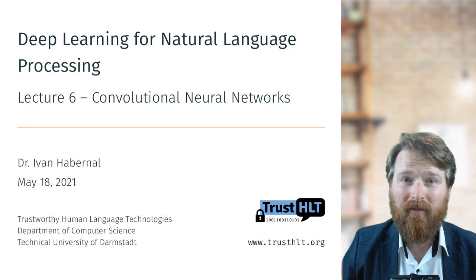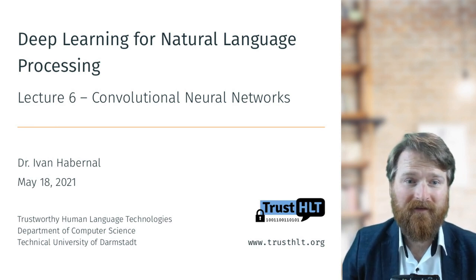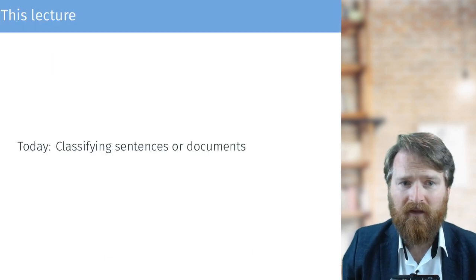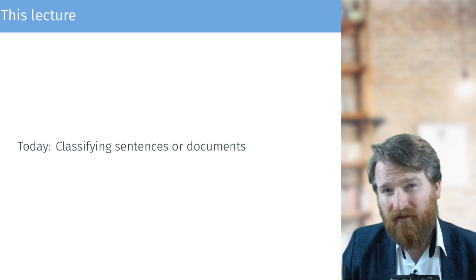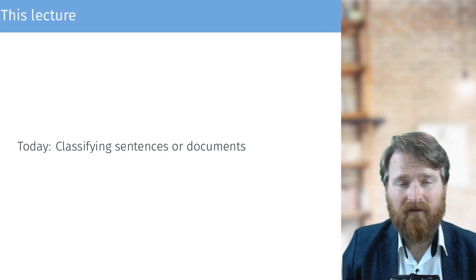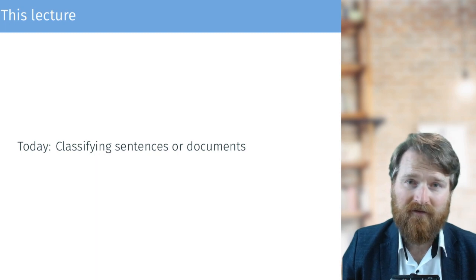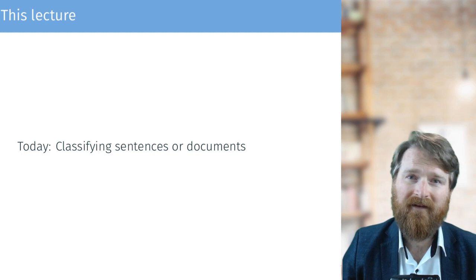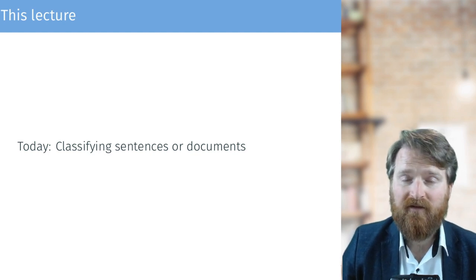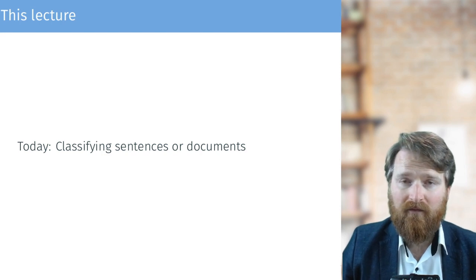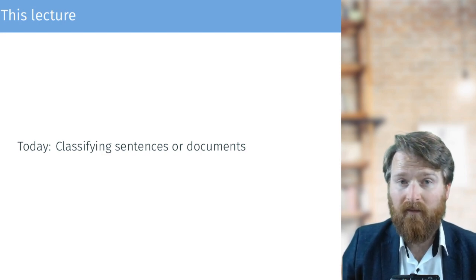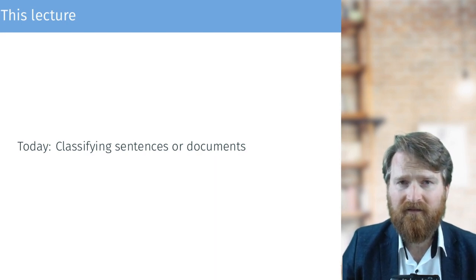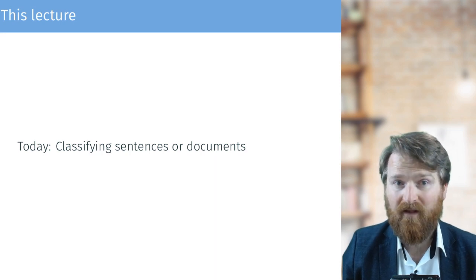Welcome to Deep Learning for NLP, Lecture 6. My name is Ivan Habernau and today we'll be talking about convolutional neural networks. In the last few lectures we spent a lot of time talking about embeddings and different sorts of embeddings, why they are important as the basic building blocks of what makes deep learning in NLP so powerful — this representation of embeddings. Today we're moving towards the end task: where can we actually use these embeddings, and we'll be talking in particular about classifying sentences or documents.